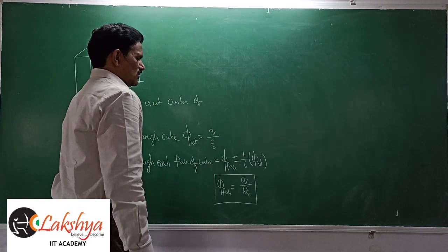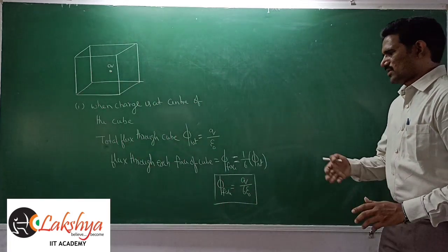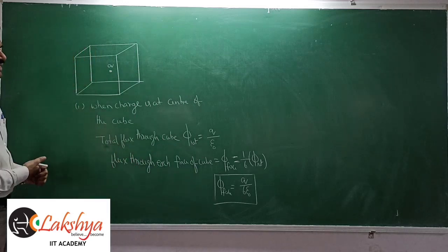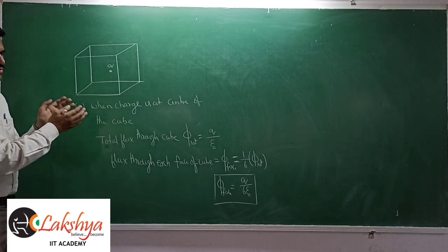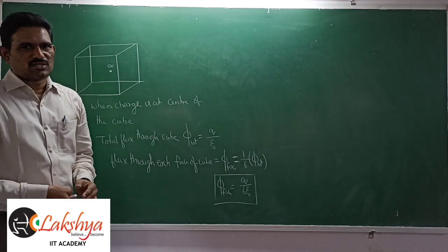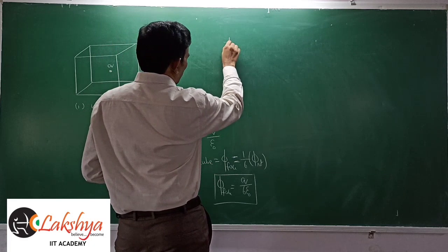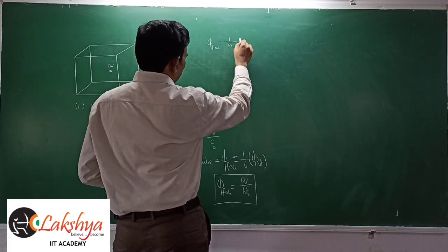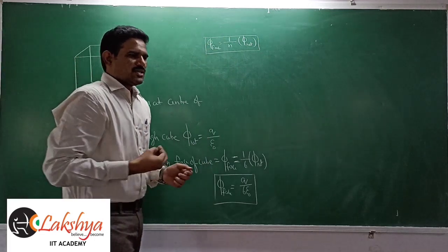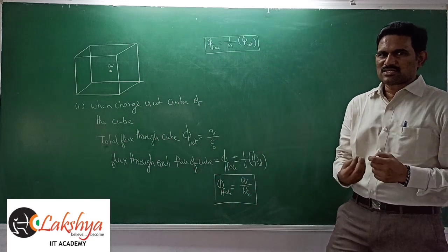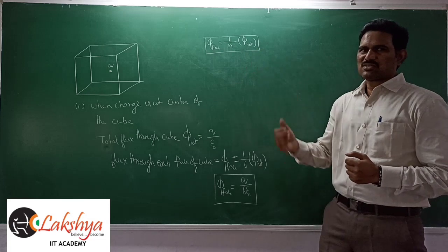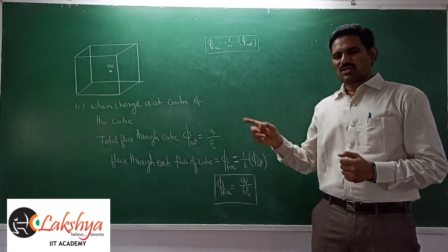In general, whenever we have a symmetrical object with N identical sides and a charge placed at the geometric center, the flux through each face is 1/N times the net flux. This formula is applicable only when the body is symmetrical and the charge is placed at the center.